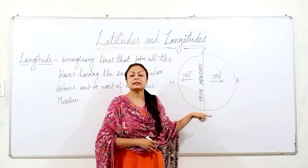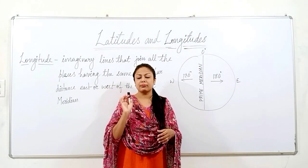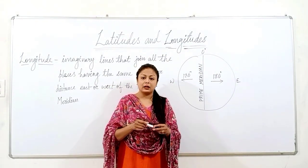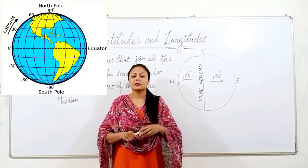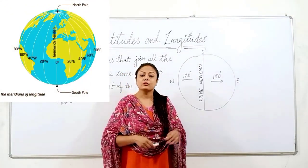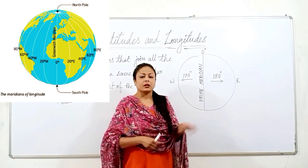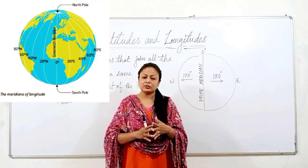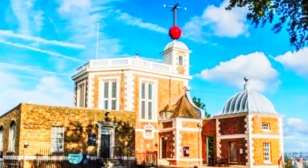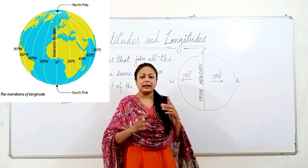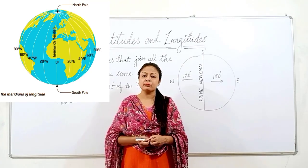If you see here, there is a line drawn — this is the prime meridian. So students, as the equator is the most important latitude and is the reference line for other latitudes, similarly in case of longitudes, the prime meridian is the reference line — the most important longitude. It is marked as 0 degrees. We call this the prime meridian and it passes through Greenwich, London, where there is a British Royal Observatory. And therefore this longitude has been named and marked as the most important longitude — the prime meridian.